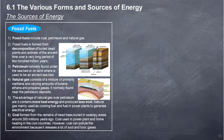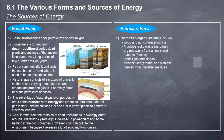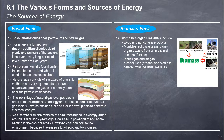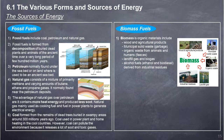Coal is formed from the remains of dead trees buried in swampy areas around 300 million years ago. Coal is used in power plants and for home heating in cooler countries. However, coal can pollute the environment because it releases a lot of soot and toxic gases. Biomass fuels: Biomass is organic material including wood and agricultural products, municipal solid waste and garbage, organic waste from animals and humans (feces), landfill gas and biogas, and alcohol fuels such as ethanol and biodiesel derived from industrial residues.